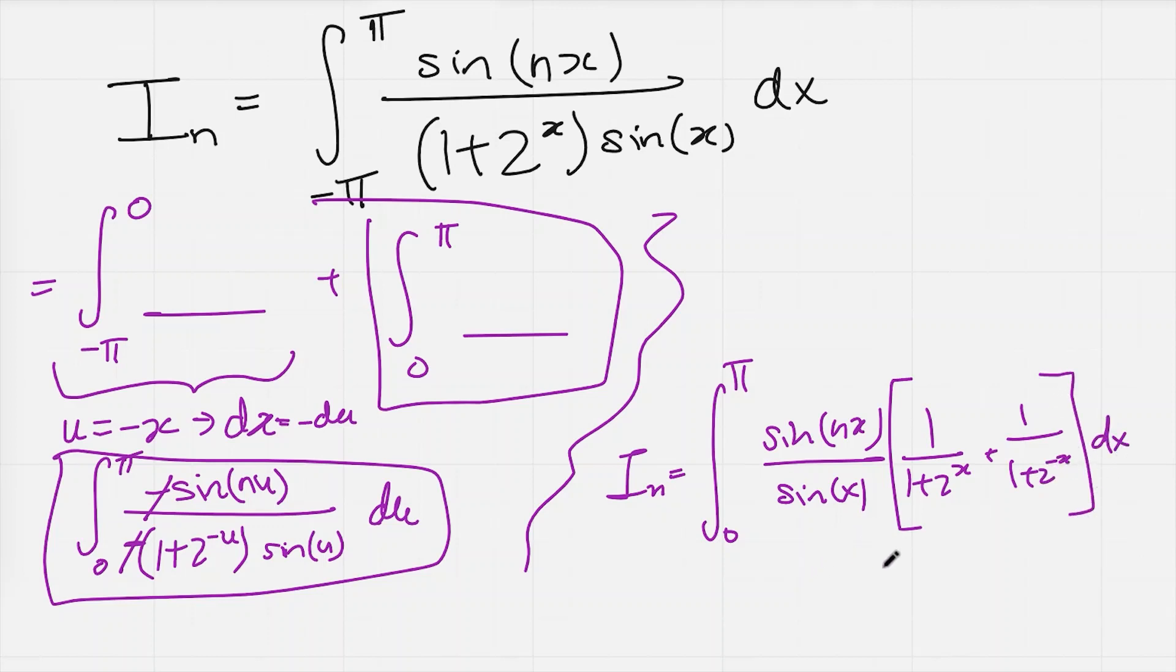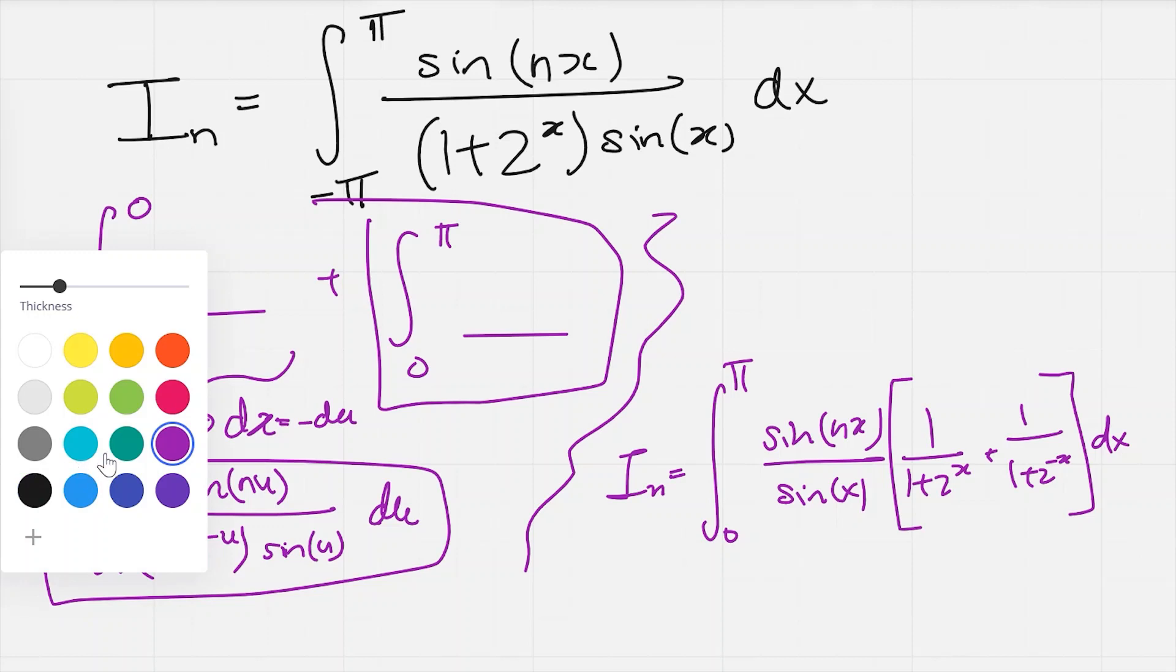But I can go one step further because if I look at this second fraction here, if I multiply the top and bottom by 2 to the x, the numerator is just going to become 2 to the x. And the denominator is going to become 2 to the x plus 1. But that's the same as this denominator, so I can bring them together. So just to be perfectly clear, this thing I can multiply top and bottom by 2 to the x.